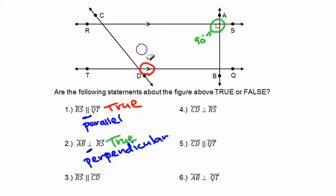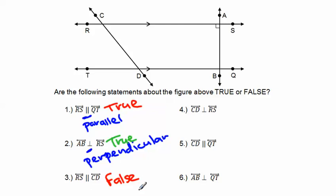Problem three: is line RS parallel to line CD? Well, these lines are crossing paths, and you can't have two parallel lines cross — so this is a false statement. Problem four: is line CD perpendicular to line RS? They do intersect, but are they intersecting at a 90-degree angle? They definitely are not — there's no 90-degree angle marker shown. So this is also false.